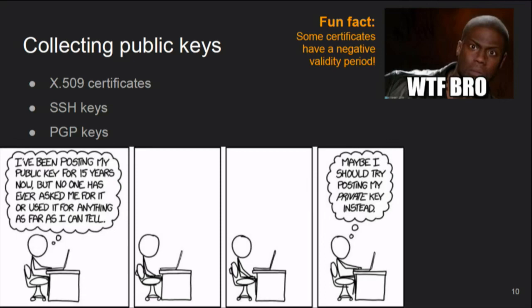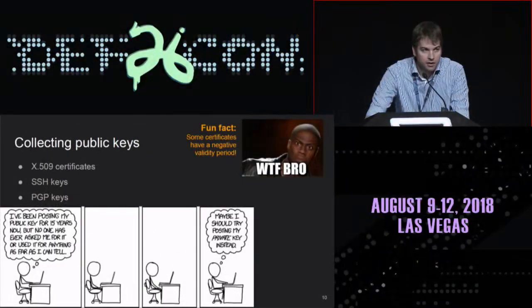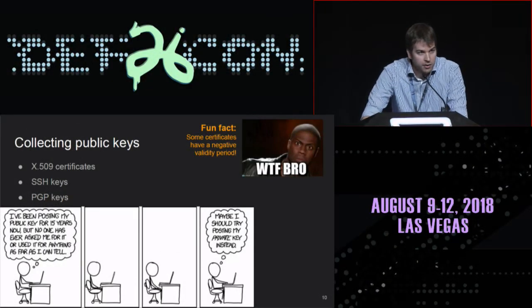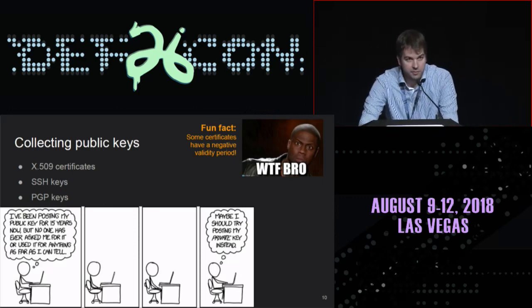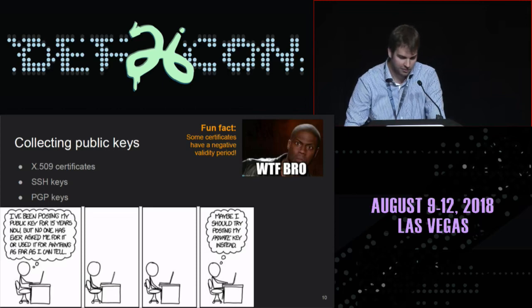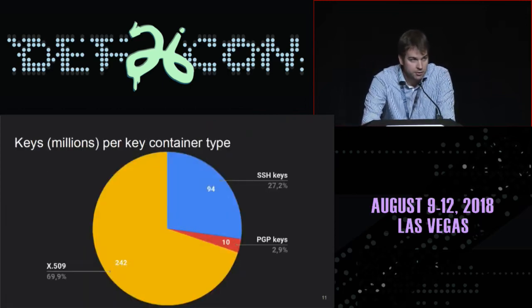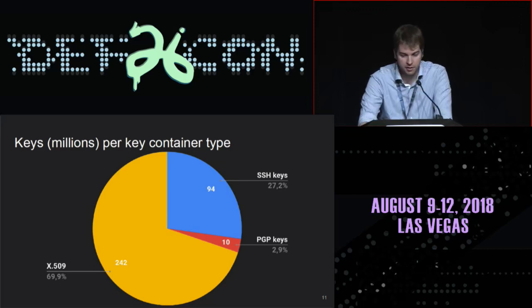Public keys are everywhere, and we focused on the three most common key container types: X.509 certificates — which you find in HTTPS — SSH keys, and PGP keys. About 70% of our data set came from certificates, so that's about 240 million keys. We also have 90 million SSH keys and about 10 million PGP keys in our database. And we found quite a few interesting results, including some crazy things — for example, some certificates actually have a negative validity period.